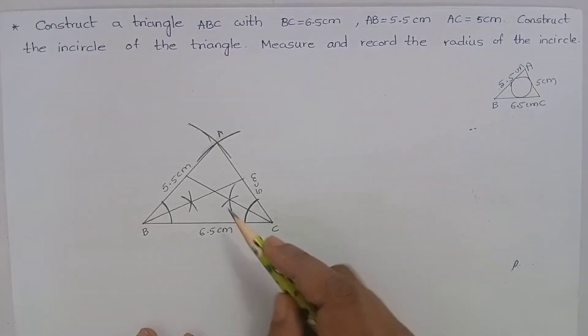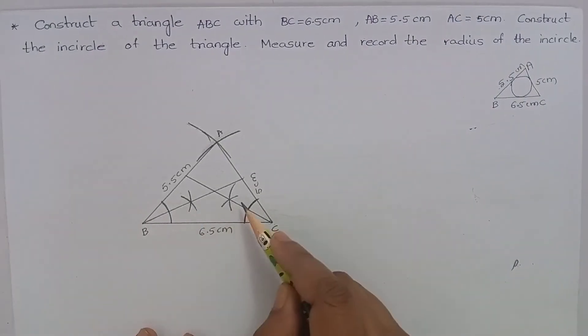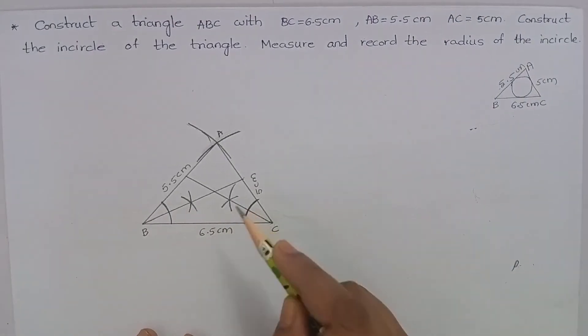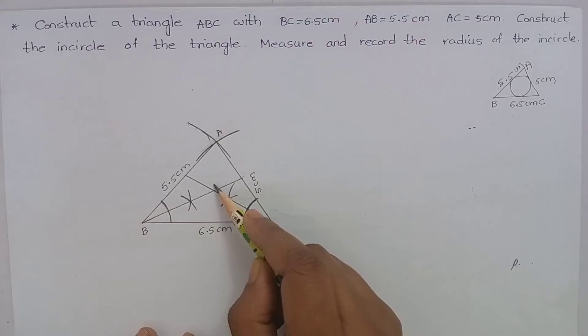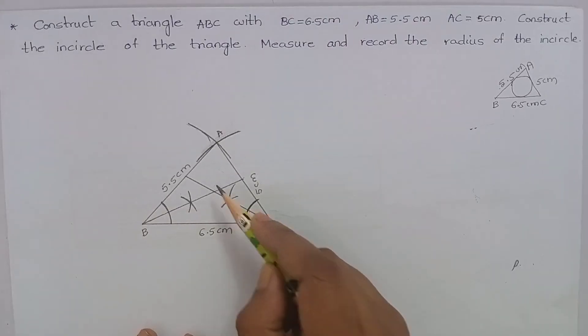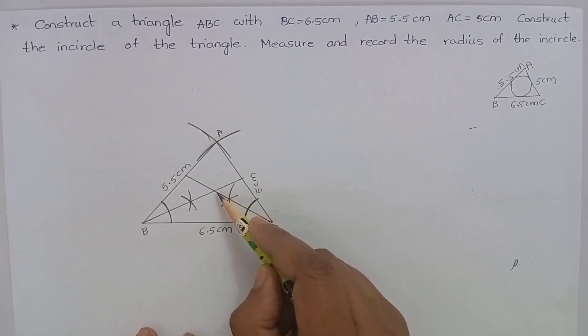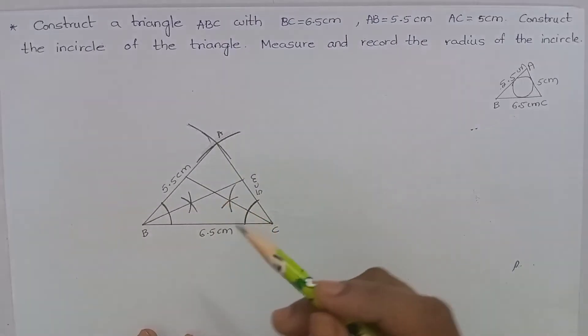These two angle bisectors meet at this point. Name this point as I.